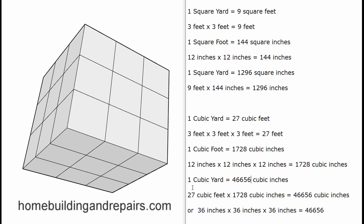For cubic inches in a cubic yard, you'd multiply 36 by 36 by 36 — since a cubic yard has 36 inches on each side. Alternatively, take 27 cubic feet and multiply by 1,728 cubic inches per cubic foot to get the same result.